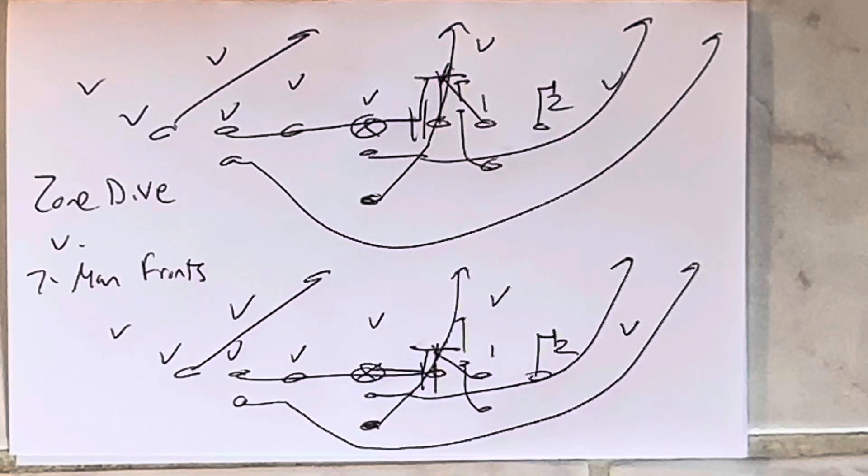You have to practice zone dive at least 500 times before you ever compete against another team. Those first 10 days of practice, you've got to run zone dive 500 times. You've got to run it 50 times of practice with your first offense, then 50 times with your second offense.